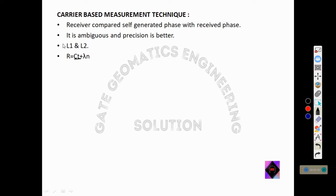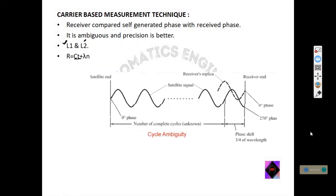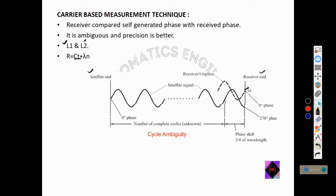The carriers used for carrier-based measurement are L1 and L2. This is the signal from the satellite end and this is the replicated signal from the receiver end. The receiver tries to measure the ambiguity. Ambiguity is the number of integer carrier phase cycles between the user and the satellite at the start of tracking. Here the satellite end is at zero degree phase but the receiver's replica is at 270 degree phase.